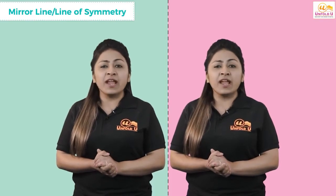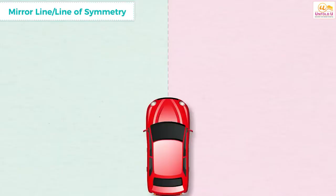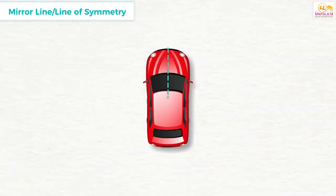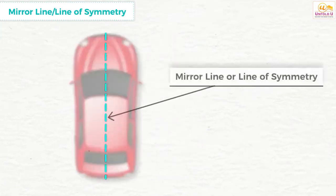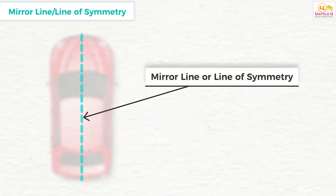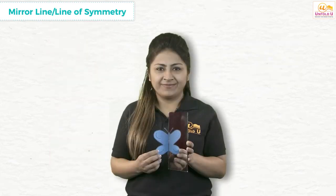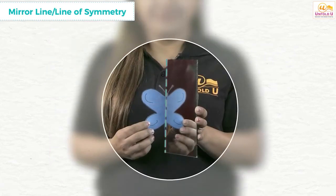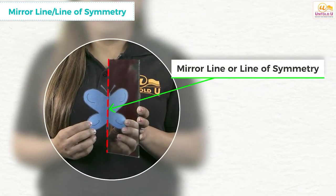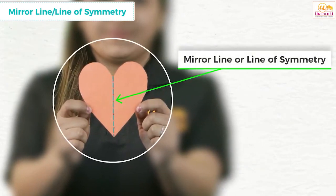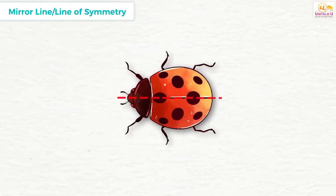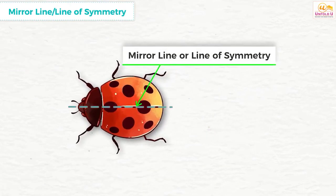Let us now understand what is line of symmetry. The line that divides an object or shape into two equal halves is called the mirror line or line of symmetry. In the same mirror games we just played, the mirror itself was a mirror line or line of symmetry. In this heart, this is a line of symmetry. Yet another example is that of a beetle whose line of symmetry is as shown.